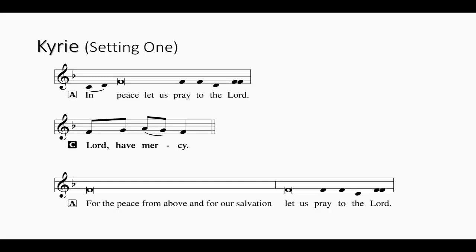"In peace let us pray to the Lord." It doesn't have to be fast, but it ought to just flow through naturally. Then when you come to the second petition at the bottom of the screen, you notice again we have a reciting tone with a lot of syllables, followed then by that petition "let us pray to the Lord." Here again, don't rush the notes under the reciting tone and then slow them down at the end. That's so often the way I hear this sung, so that it comes out something like: "For the peace from above and for our salvation, let us pray to the Lord." It's as though they see those last four words with separate notes for each one and think they have to sing those slowly and carefully, but everything that comes before can be shot out like a machine gun. Let it be the rhythm of speech: "For the peace from above and for our salvation, let us pray to the Lord."